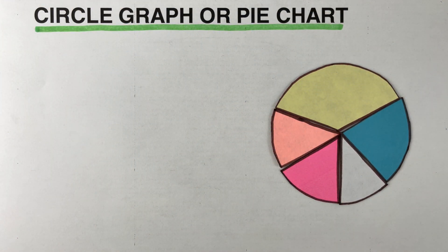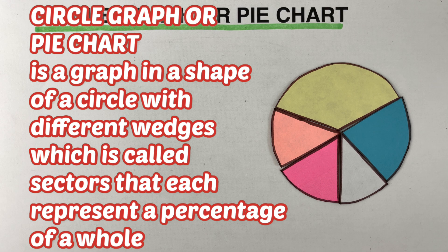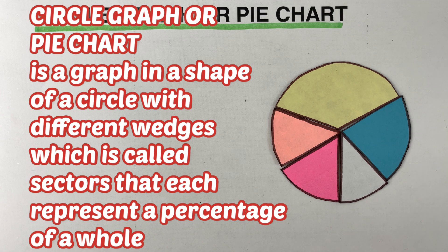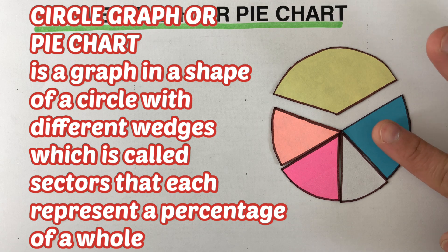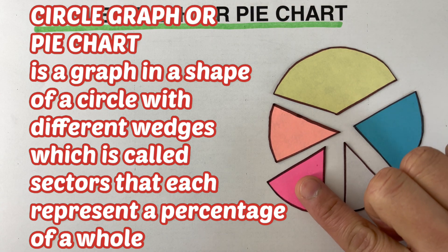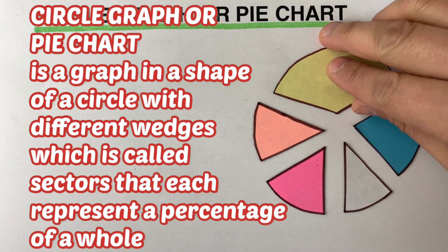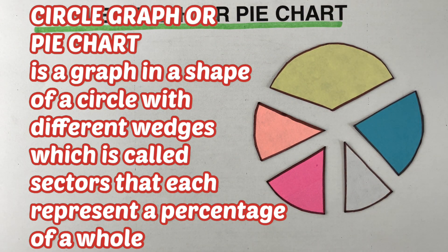This video focuses on circle graphs or pie charts. By definition, a circle graph or pie chart is a graph in the shape of a circle made up of different wedges, which we call sectors. Each of these sectors or wedges represents a percentage of a whole. That's probably where the name pie chart comes from.